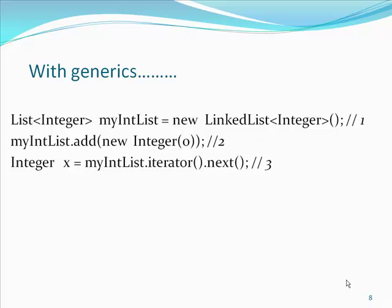Now you might think that all we have accomplished is to move the clutter around. Instead of a cast to integer on line 3, we have integer as the type parameter on line 1. However, there is a very big difference here. The compiler can now check the type correctness of the program at compile time. When myIntList is declared with type List<Integer>, this tells us something about the variable myIntList which holds true whatever and whenever it is used, and the compiler will guarantee it. In contrast, the cast tells us something the programmer thinks is true at a single point in the code.